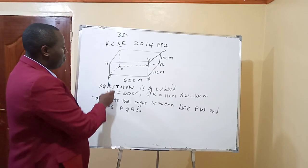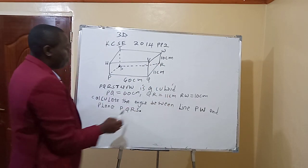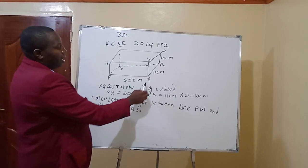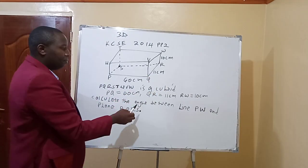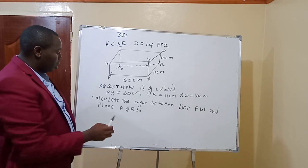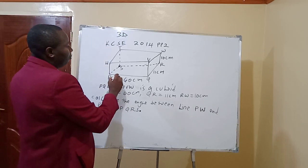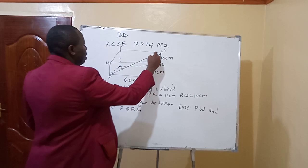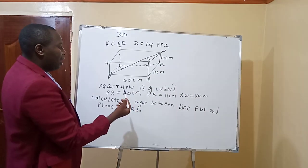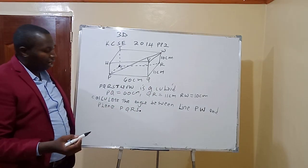So, you are given a cuboid PQRSTUVW. PQ is 60 centimetres, QR is 11 centimetres, and RW is 10 centimetres. In our question, we are told: calculate the angle between the line PW and the plane PQRS.